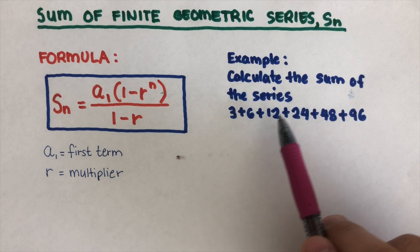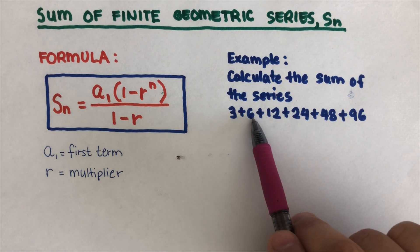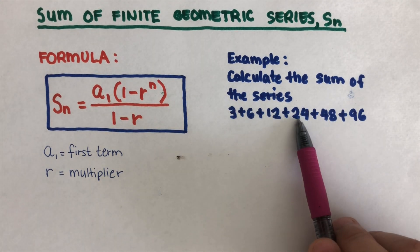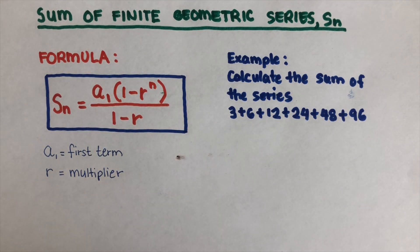Calculate the sum of the series: 3 plus 6 plus 12 plus 24 plus 48 plus 96. So the first thing that we are going to do is to determine the r or the multiplier.